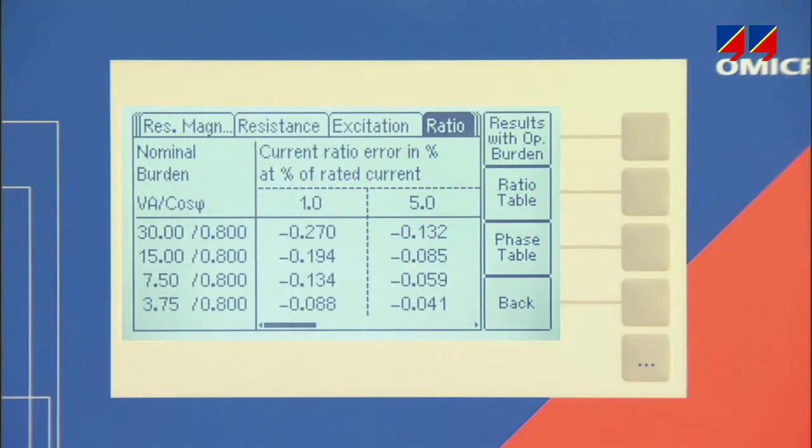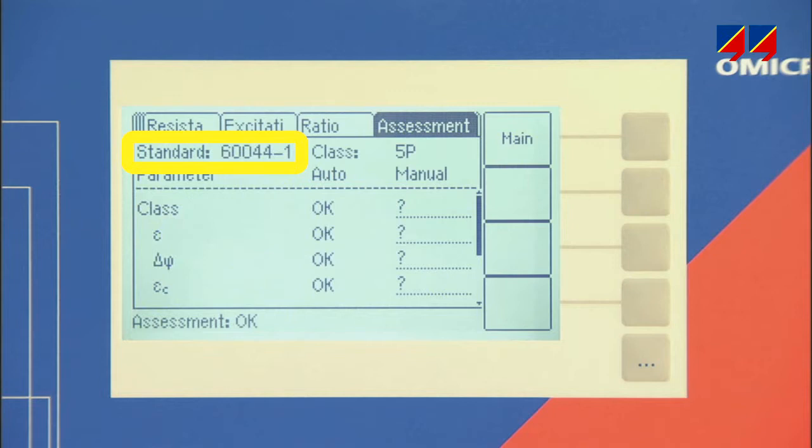For metering CTs, it measures the amplitude and phase angle accuracy for combinations of primary current and burden, as defined in the relevant standard, and automatically assesses if the CT is within the specified limits.